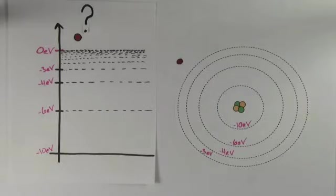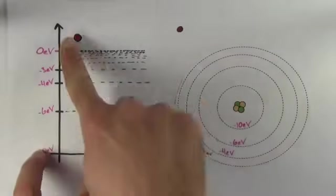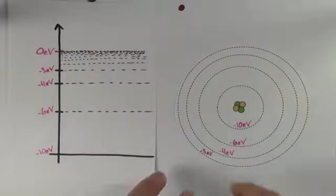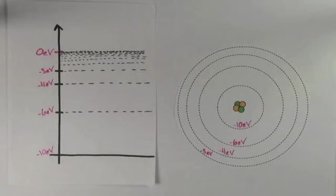Well, if an electron has more than 0 eV energy, that means it's got positive energy. And if it's got positive energy, it's not bound to the atom anymore. It'll be free to leave; it'll be gone, and we'll say that we've ionized the atom by removing an electron.